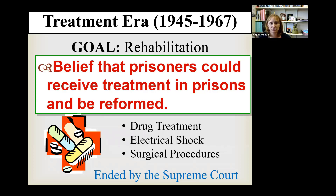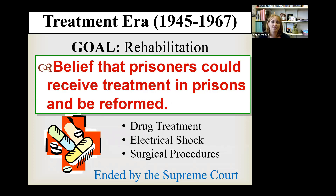They started using things like drug treatment — providing lots of drugs to inmates to make them more docile. They also used electric shock and surgical procedures, the idea being that if they could remove the 'bad part' of your brain that's making you commit crimes, you won't commit crimes anymore. A lot of these procedures were done on inmates against their will — they were not voluntarily agreeing to these forms of treatment. Eventually inmates protested, took it to the Supreme Court, and the Supreme Court ruled that you cannot force people to undergo medical care and treatment against their constitutional rights. That basically brought an end to the treatment era.